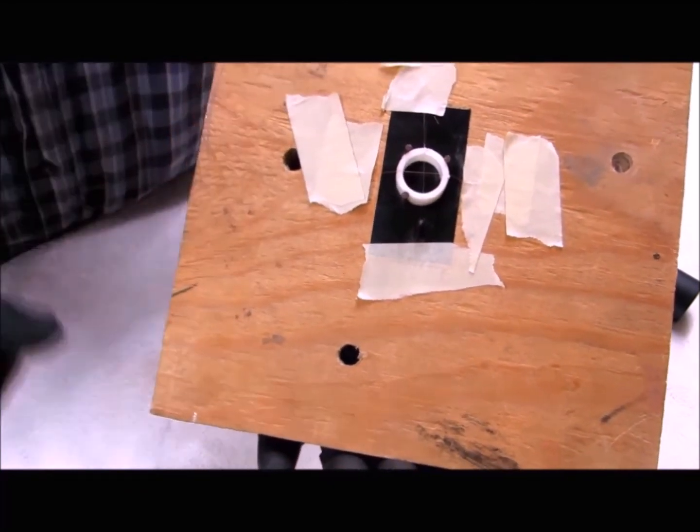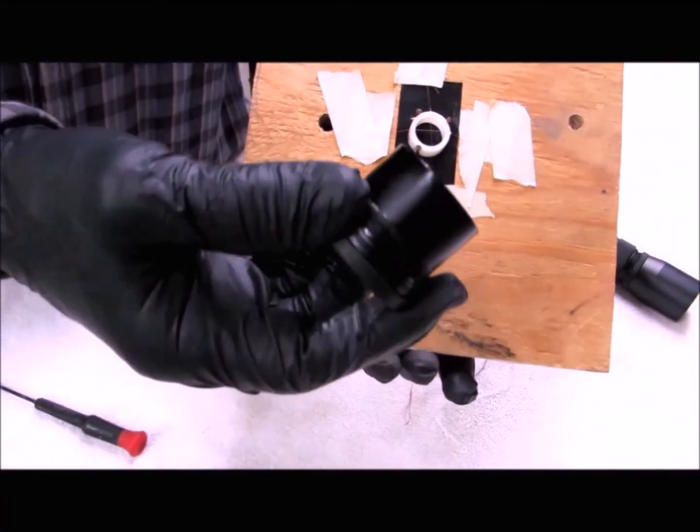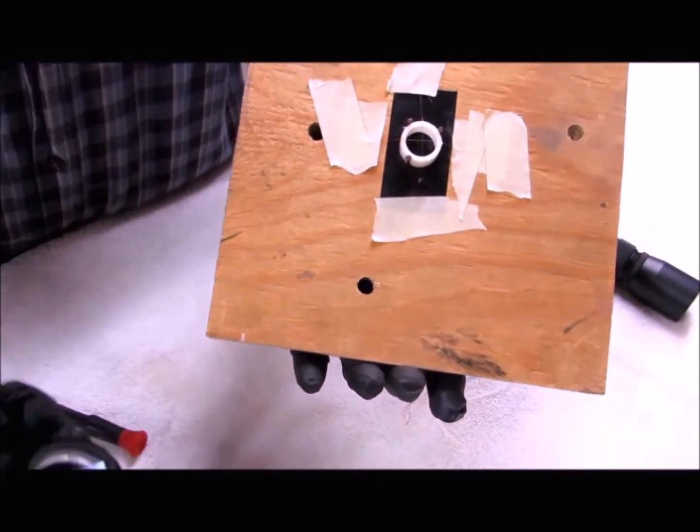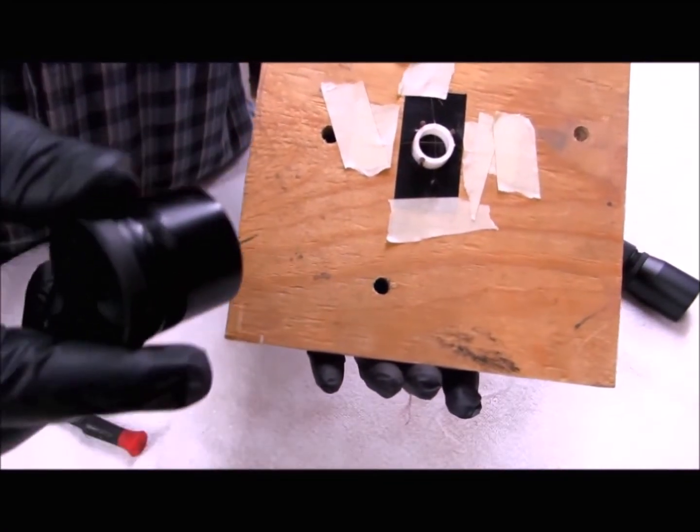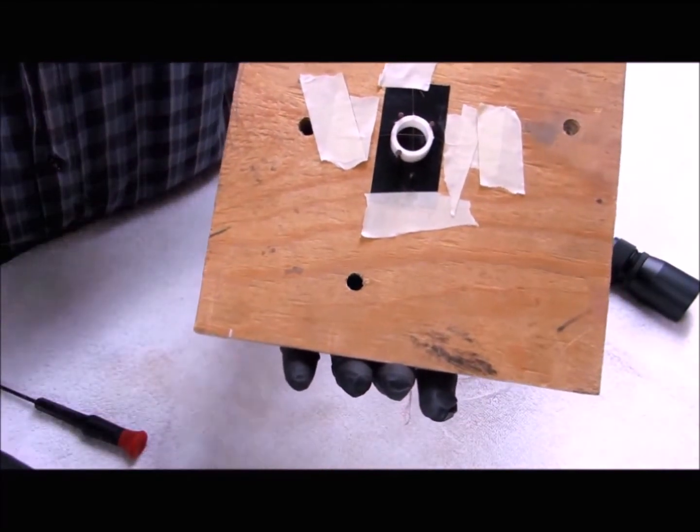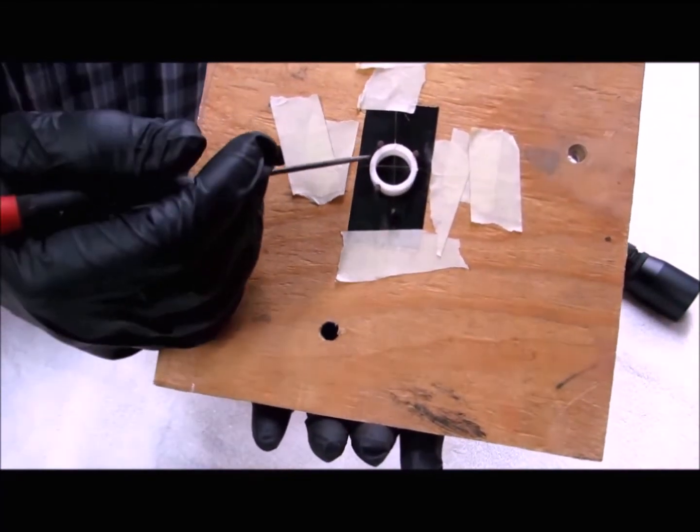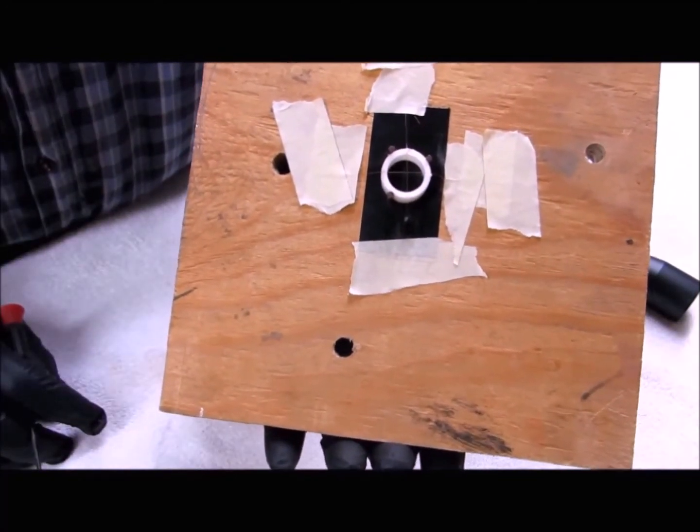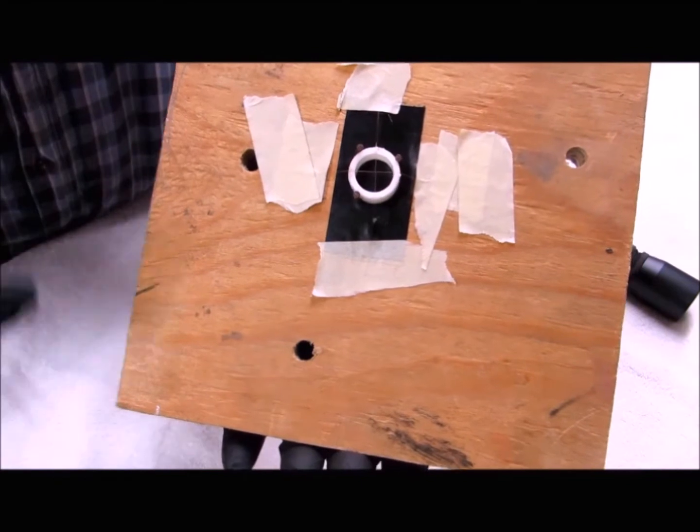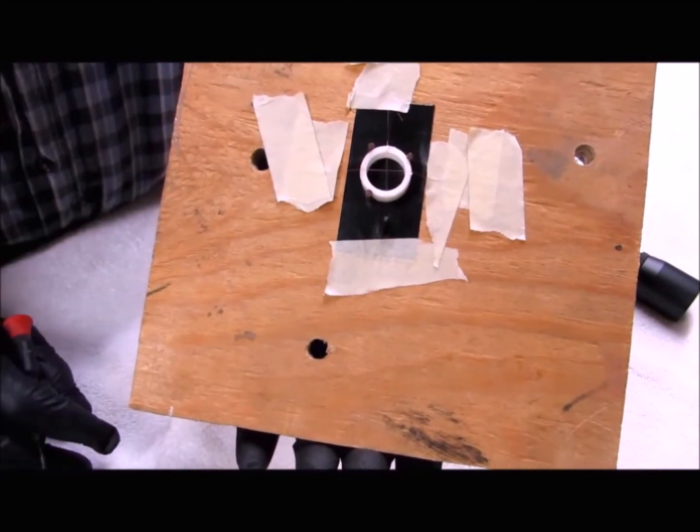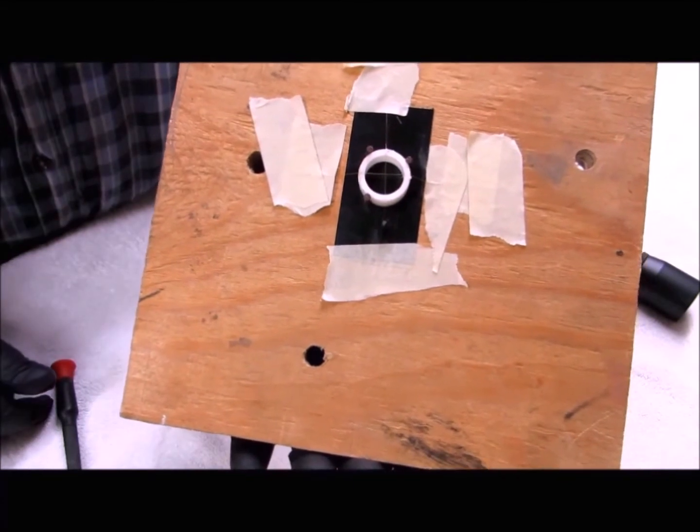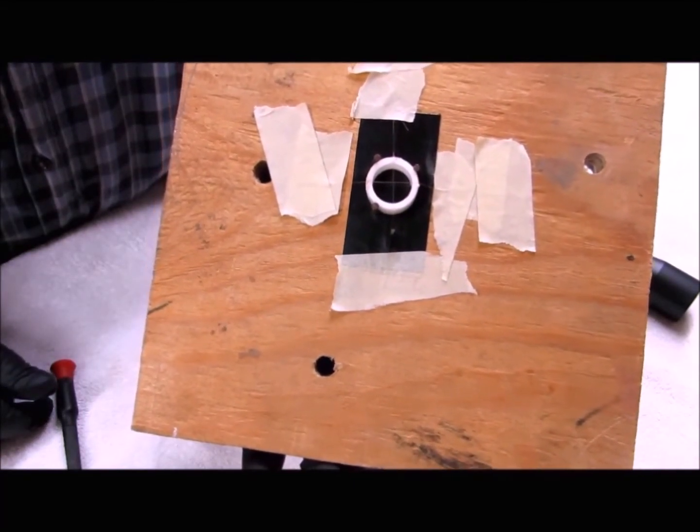Once you're satisfied with what you have, you can use your ocular lens to examine your reticle for both imperfections and how well you have it centered. If all is well, use superglue to fasten the crosshairs to your reticle holder. Be careful not to get superglue inside the tube because you'll be able to see that when you look through your scope.